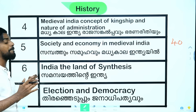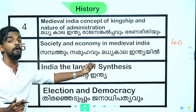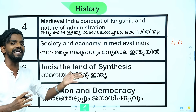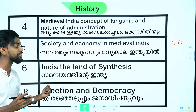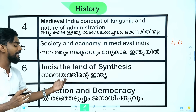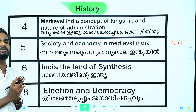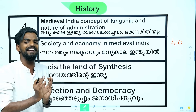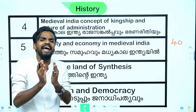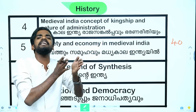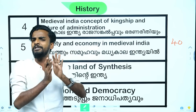This is the sixth chapter — it is the land of synthesis. This is the election and democracy. This is the third chapter. This is the seventh chapter. The fourth chapter is written in the 18th century — this chapter will be written in 1800.